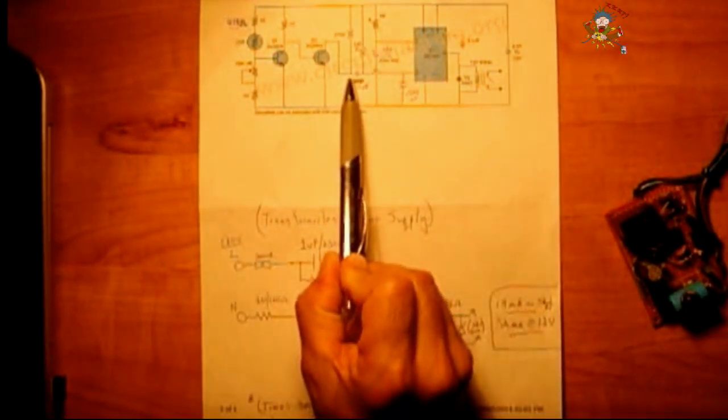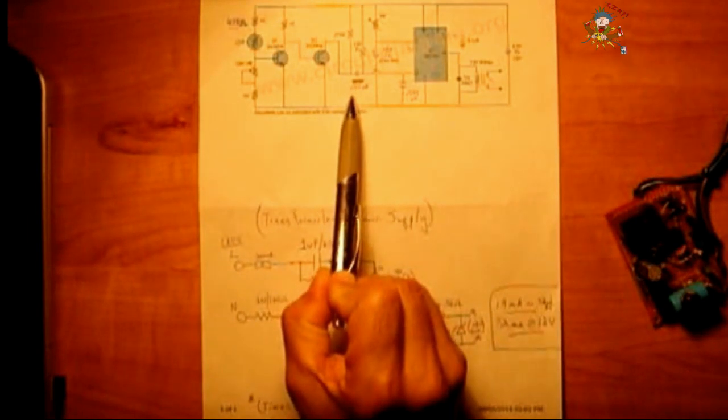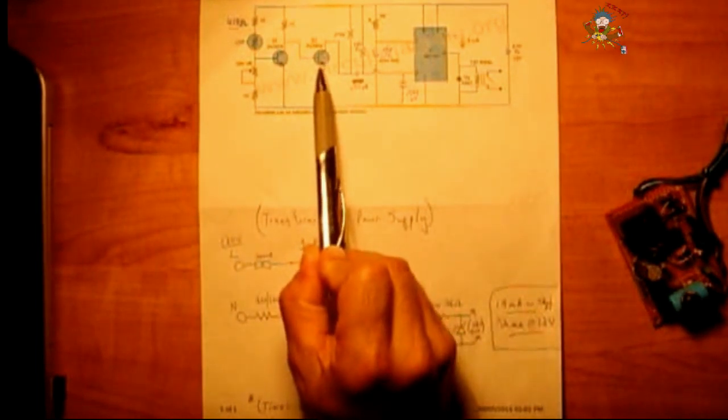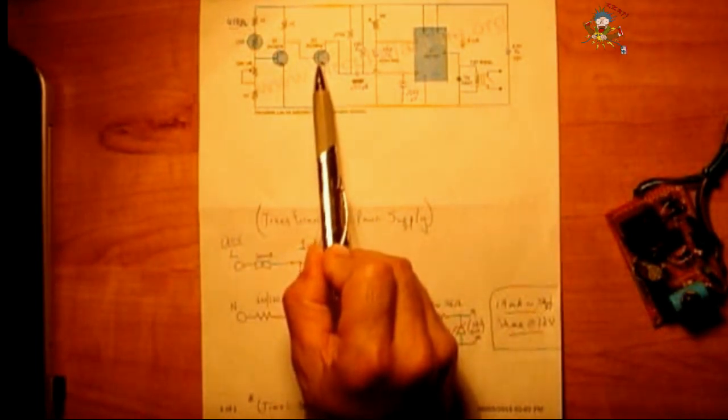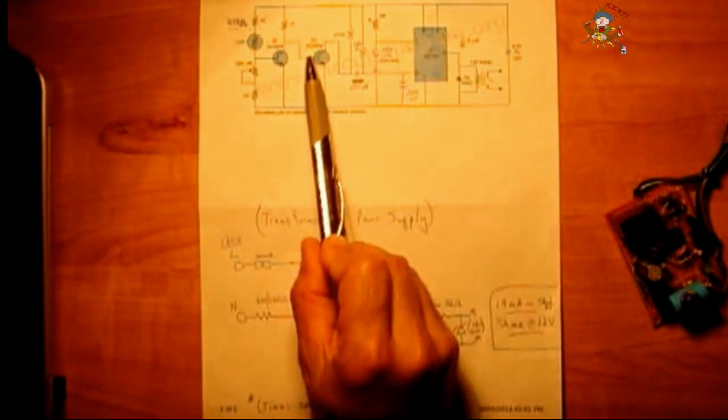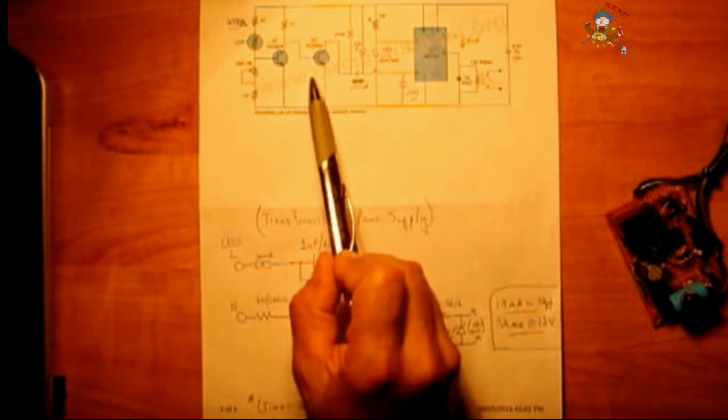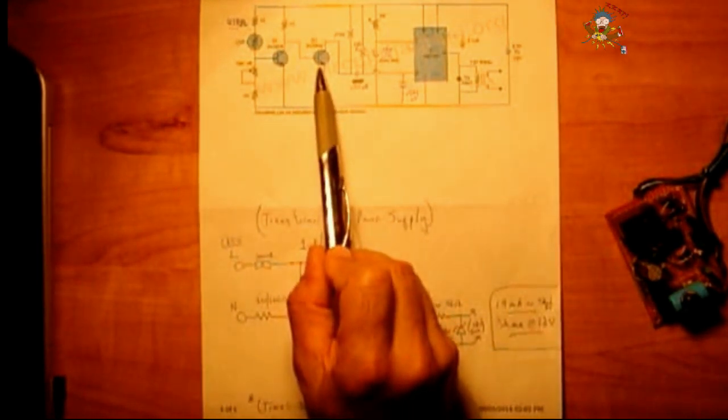After that point right here from the 270k and the 0.01 microfarad or the 103 heads into an NPN transistor. You could use a lot of different types. I think I used a KSP 2222A. You could use a 2N3904, 2N4401. There's a lot that you can use. BC547 as well.